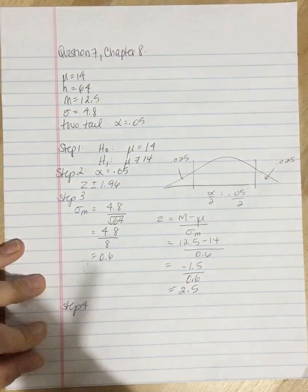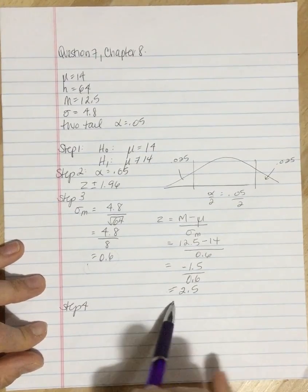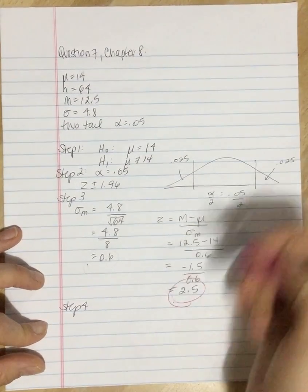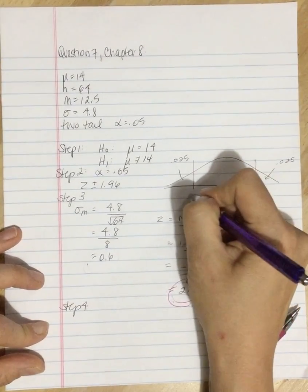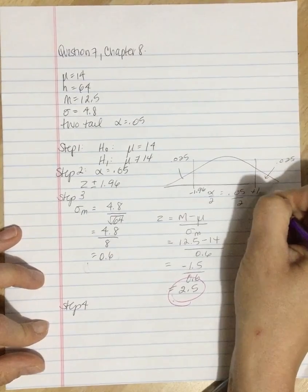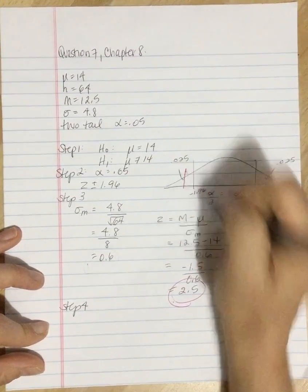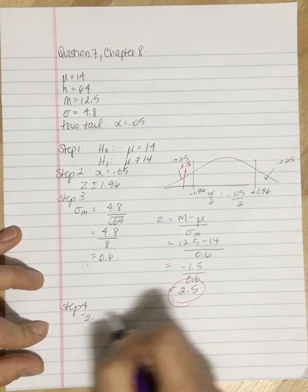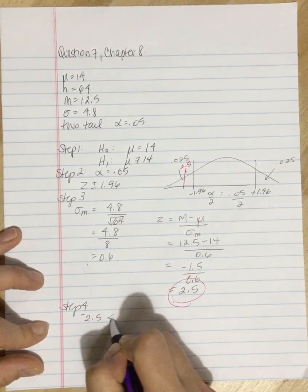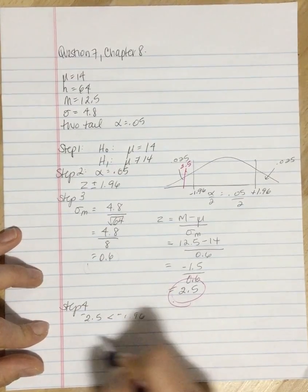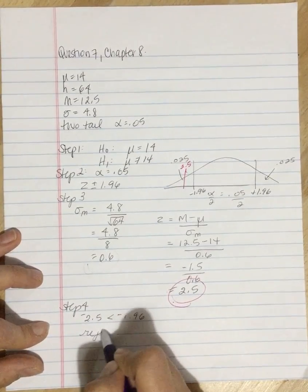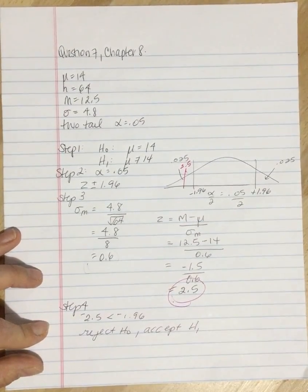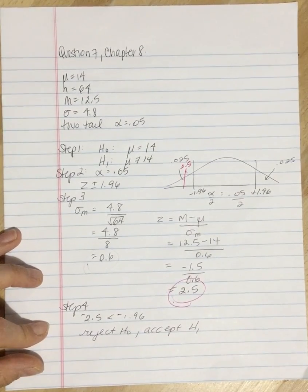Step four. We need to compare the value that we calculated in step three to the value that we found in step two. If we take this and color code it in pink, this value up here was negative 1.96 and positive 1.96. Our value is out here. It's more extreme. This is 2.5. So negative 2.5 is more extreme. It's less than negative 1.96. So our decision is we reject the null, accept the alternate, and we conclude that there is a significant change in the number of hours.